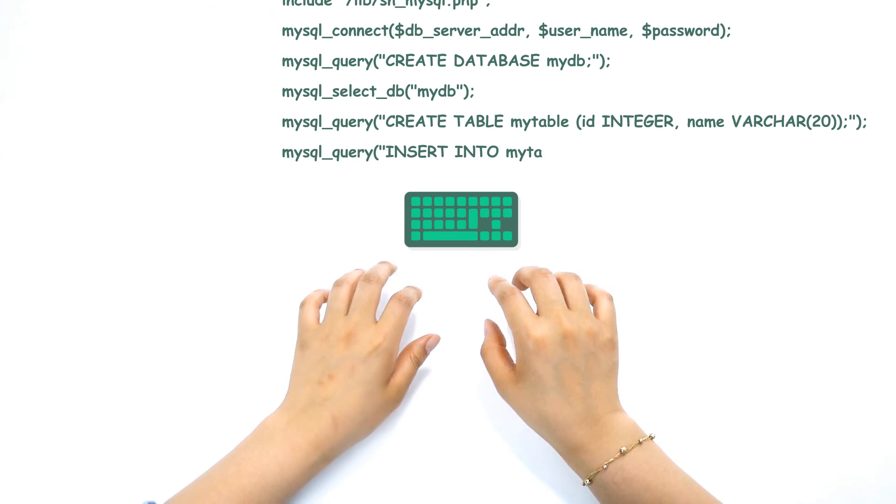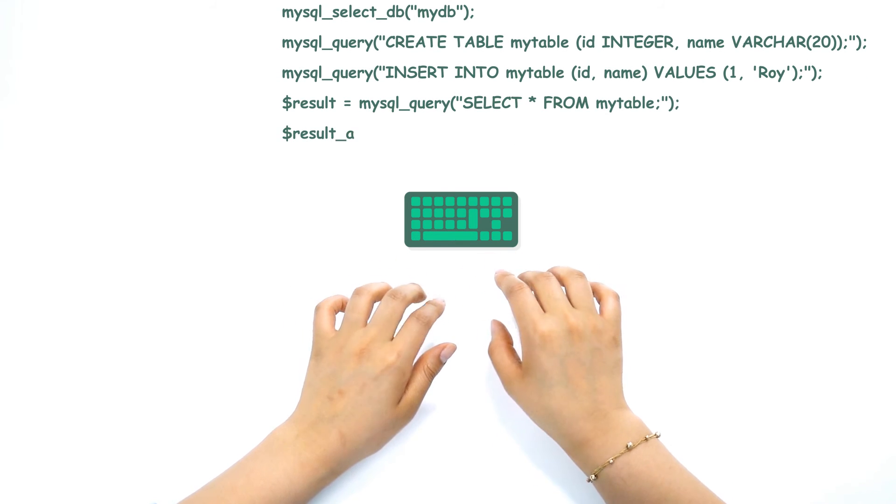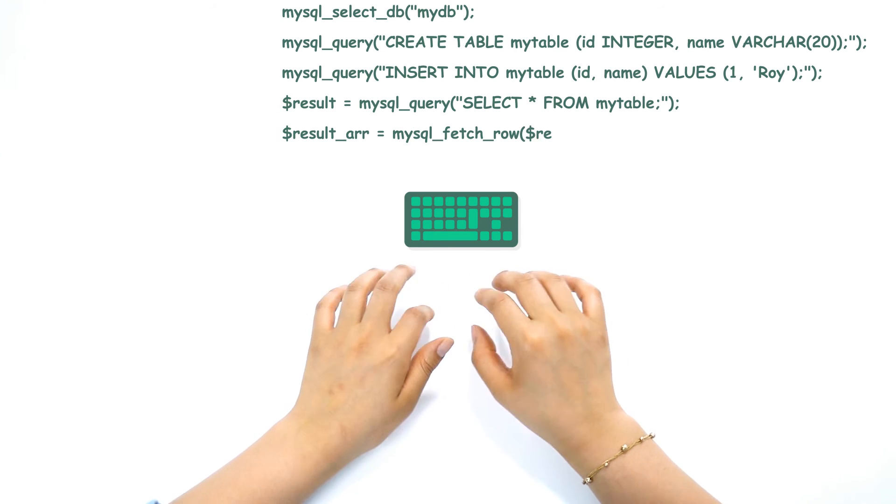Next, insert data into the table. Then we'll check the data in this line to receive and arrange the data in row form.